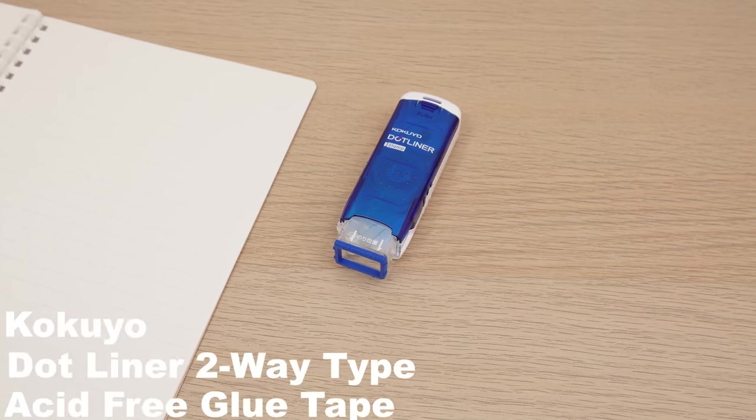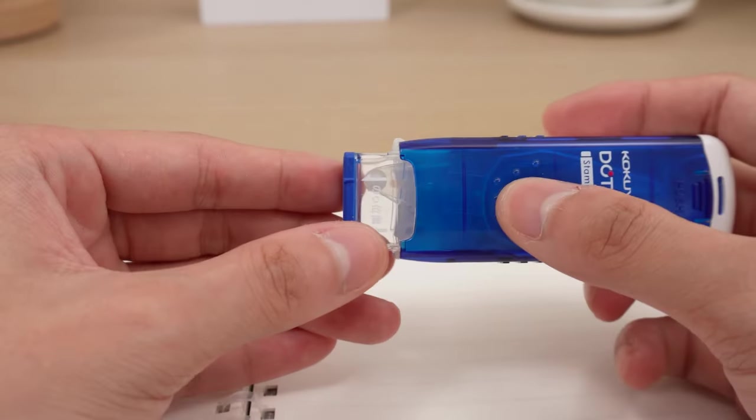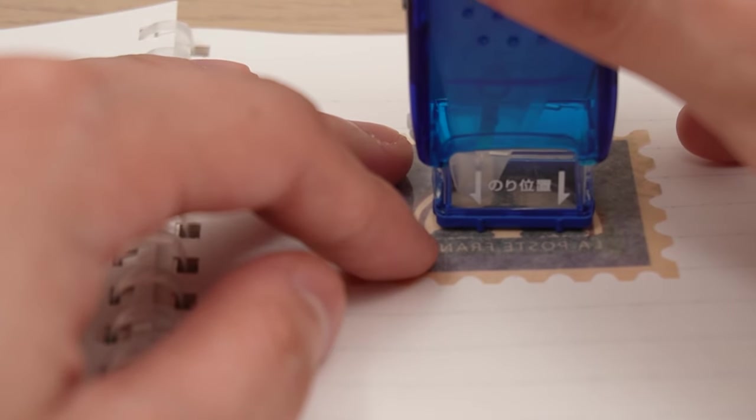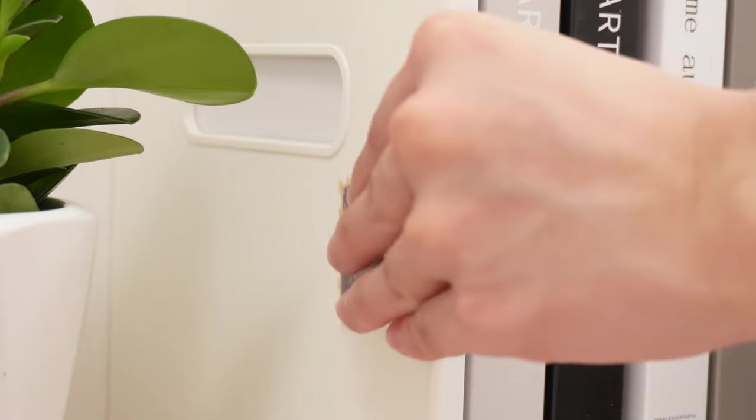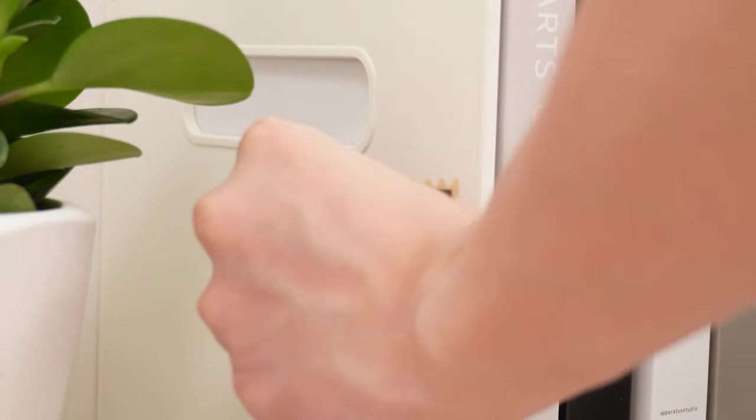The Kokuyo Dot Liner Two-Way Tight Acid-Free Glue Tape is an adhesive game changer. Its innovative design allows for two adhesive application options, pulling and pressing, adapting to various gluing needs. It's all about boosting your efficiency.